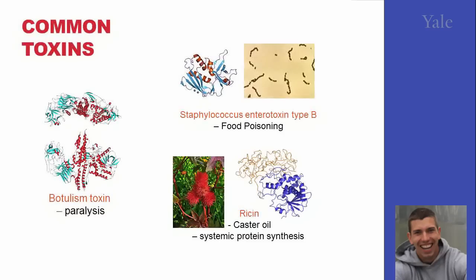We will now talk a little bit about common toxins. These are substances produced in nature and often isolated from plants, amphibians, algae, and other species. We've probably all heard about botulism toxins, which produce paralysis. We've also heard about bacterial ecotoxin, which is often the cause of food poisoning pretty much all over the world.